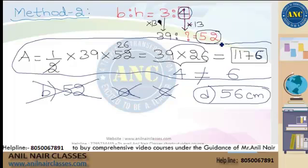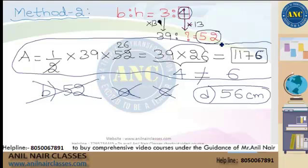This approach works in 95-96% of cases, taking the chance that the multiplying factor will be a whole number. There is no strict rule that it must be a whole number, but in the majority of cases it will be. If you have time, solve each step carefully; if you're in a hurry, use this smarter approach.